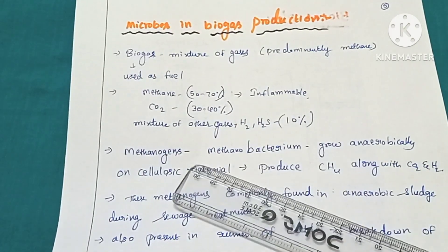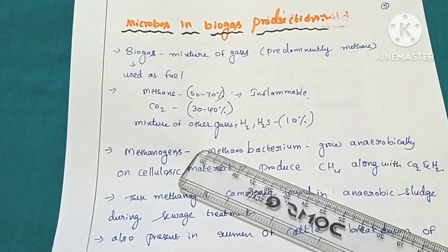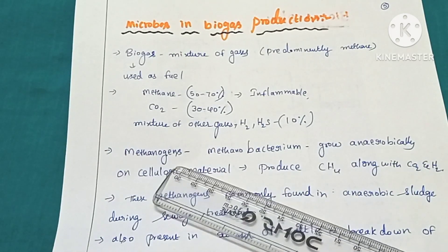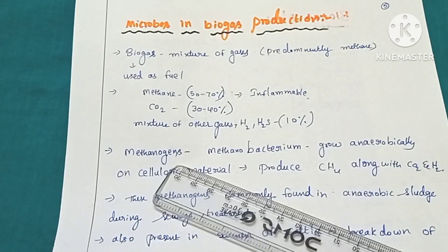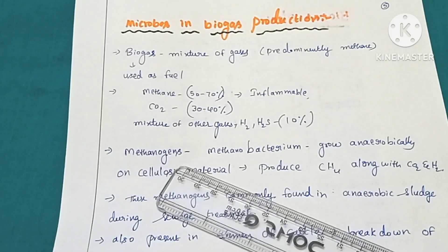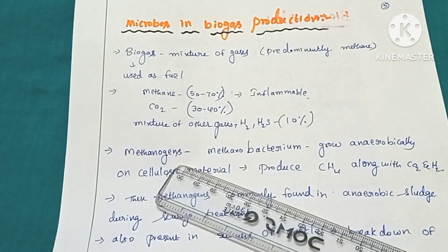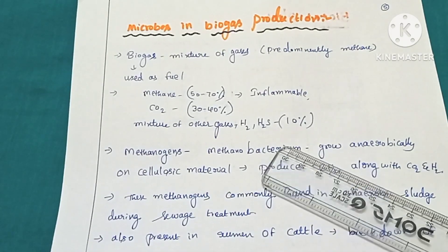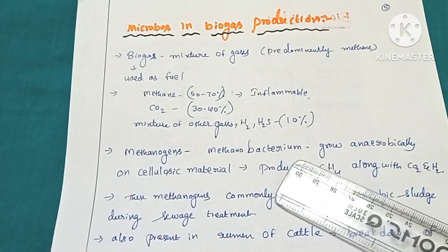Methane is the predominant gas in biogas. The microorganisms producing methane are anaerobic bacteria called methanogens. Methanogens are organisms helpful in the production of methane. There are different types of methanogenic bacteria, such as Methanobacteria and Methanococcus. These bacteria grow anaerobically — that is, they grow only in the absence of oxygen.